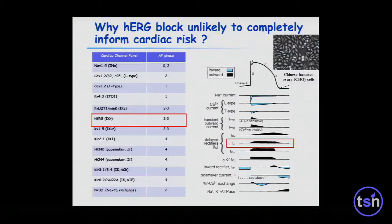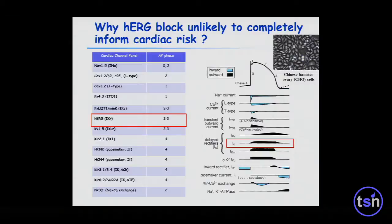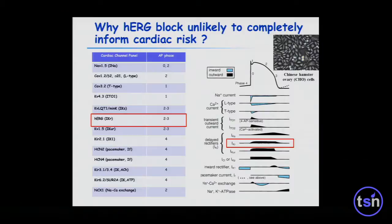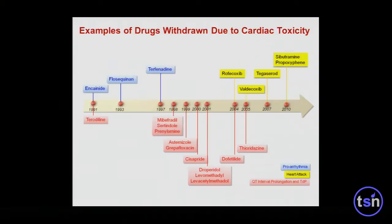Ten to twenty years ago, drug companies didn't have access to patient cardiomyocytes. Mouse neonatal cardiomyocytes stay alive in a dish only four to five days. So most people used Chinese hamster ovary cells overexpressing the HERG channel for drug screening. If a drug blocks the HERG channel, it gets killed; if it blocks the sodium channel instead, it goes undetected through the pipeline. This is part of the reason many drugs were withdrawn for proarrhythmia, heart attack, and QT interval prolongation.